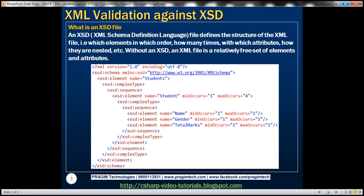Without an associated XSD file, an XML file is a relatively free set of elements and attributes. Meaning, if an XML file does not have any XSD file associated with it, then such an XML file can have any XML elements, those elements can have any attributes, and the elements can be present in any order.